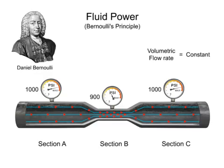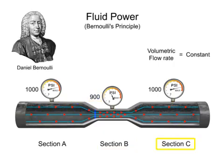This rule can also apply to the types of energy present in the system. As the pressure decreases in Section B, the potential energy converts into kinetic energy. This increases the speed of water flow and decreases the pressure. When the water reaches Section C, the kinetic energy is converted back to potential energy. This is illustrated by the decrease in speed of the water flow and its simultaneous increase in pressure.